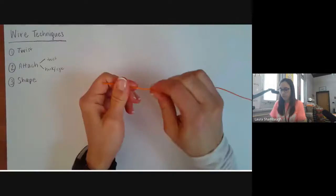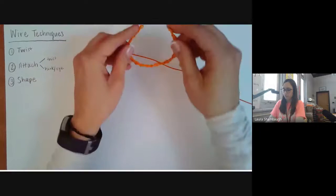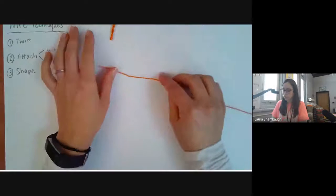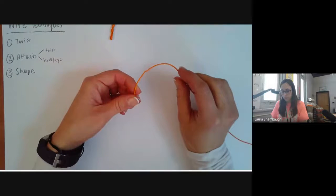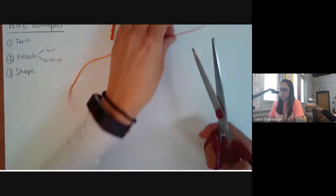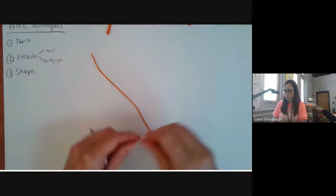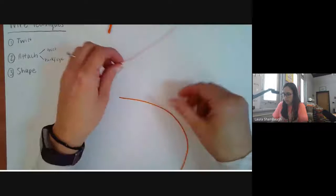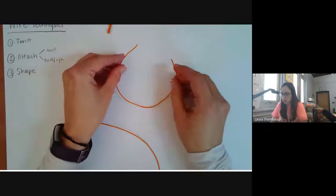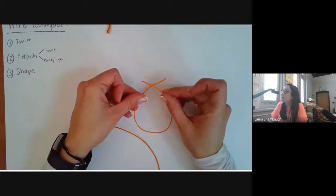The second technique is attaching. I'm going to grab another piece of wire. To attach a piece, let's say I'm going to have this be kind of like the base shape. I'm going to snip this and make a shape for the bottom of my sculpture. I'm going to make just like a circle, so I need to take these two ends, crisscross them over each other.